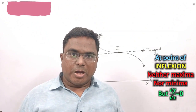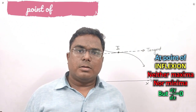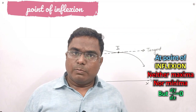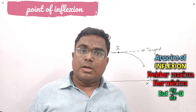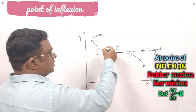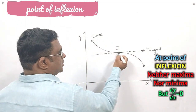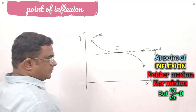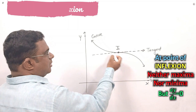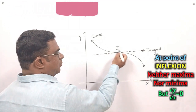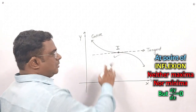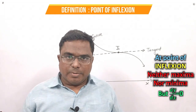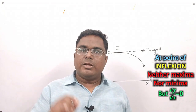Now we will understand the point of inflection. This is a very special point. At this point, the tangent is parallel to the x-axis, but the function has neither maxima nor minima at this point. So this point is considered a point of inflection — a special point at which the function has neither maxima nor minima, but the value of dy/dx becomes 0.